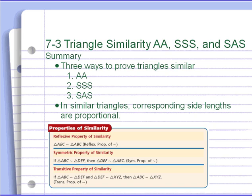To summarize, the three ways to prove triangles are similar are angle-angle, side-side-side, and side-angle-side. In similar triangles, make sure corresponding side lengths are proportional. Also, the reflexive, symmetric, and transitive properties all apply to similarity.